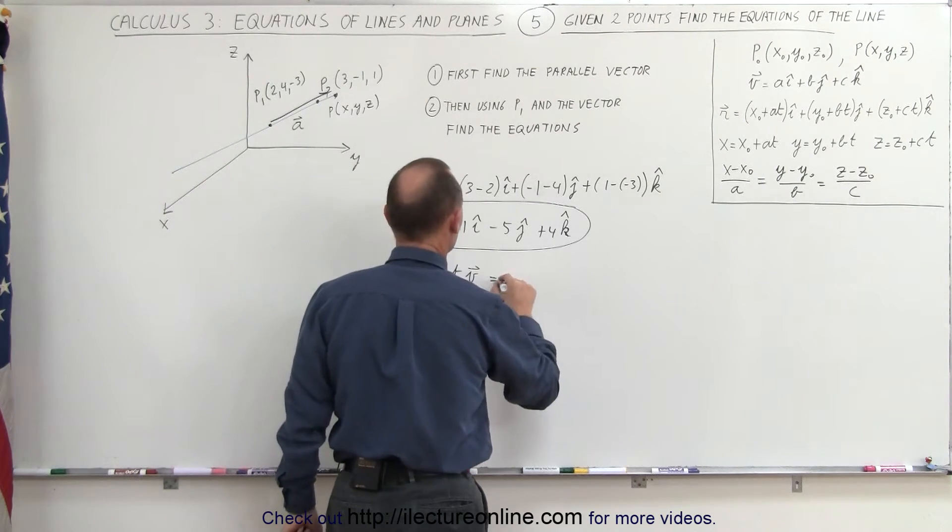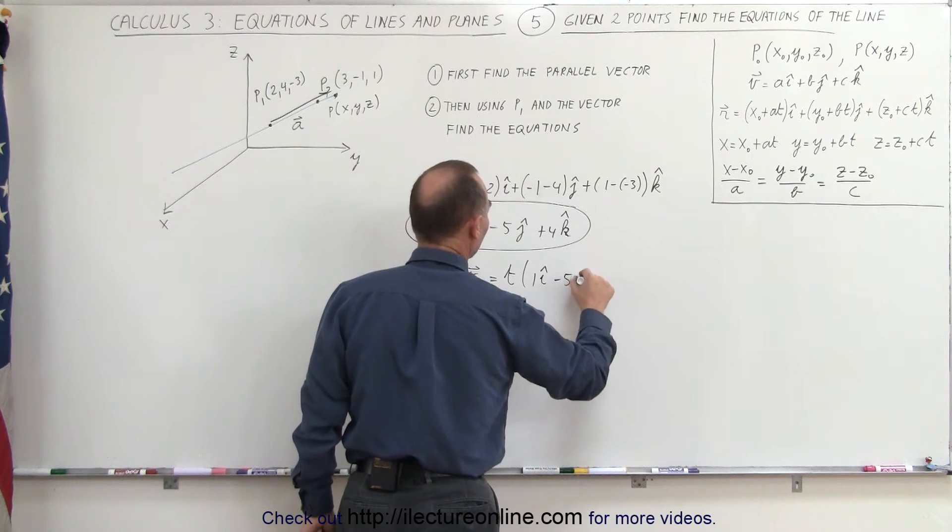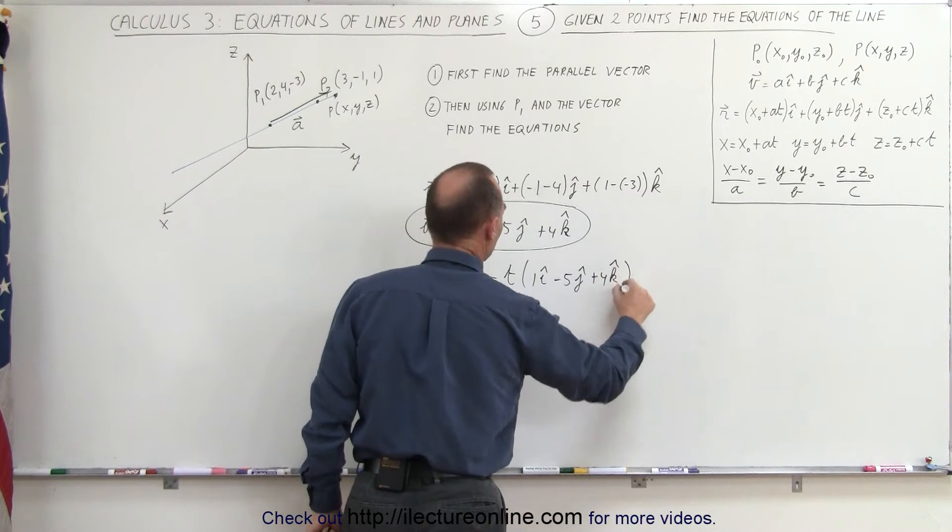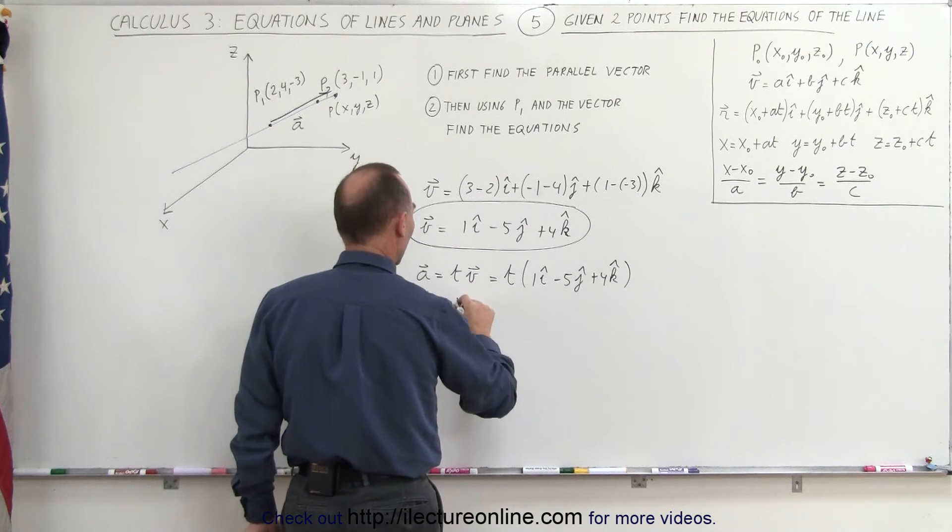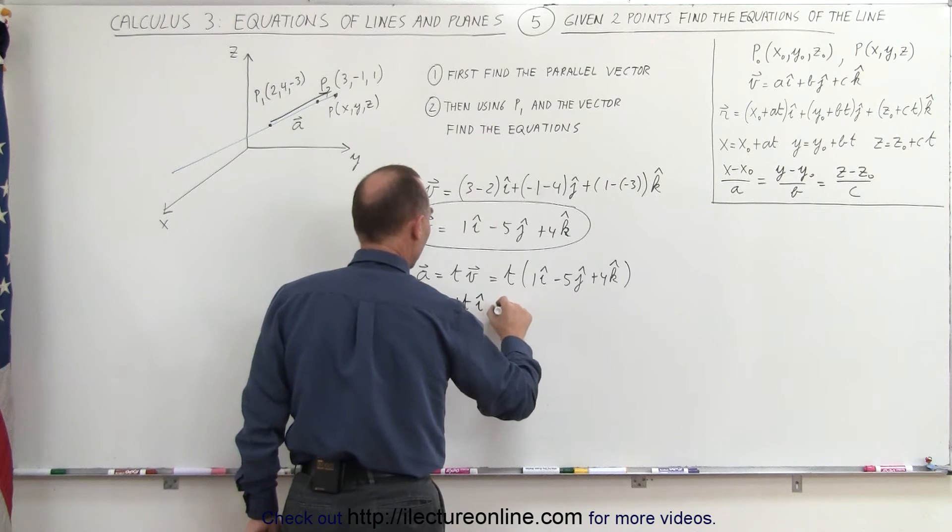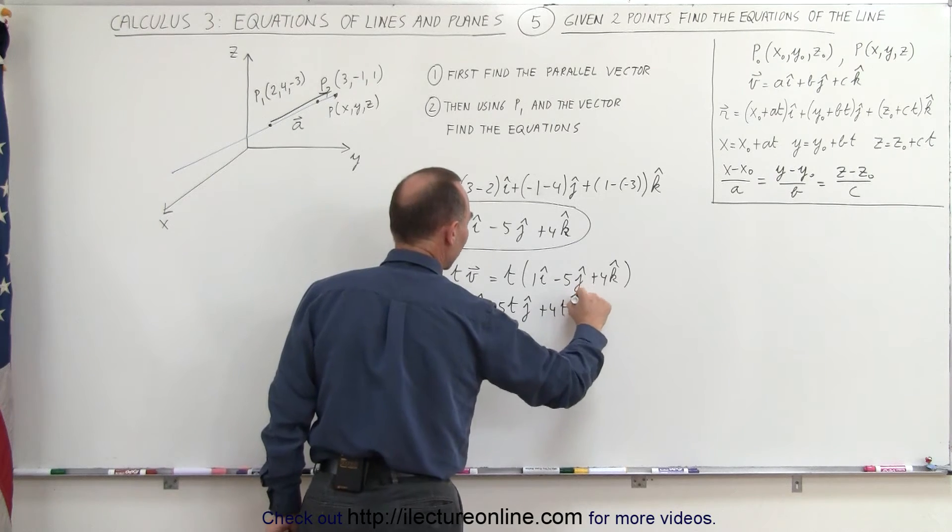Which means that this is equal to t times 1i minus 5j plus 4k, which means that the a vector is equal to 1t in the i direction minus 5t in the j direction, and plus 4t in the k direction.